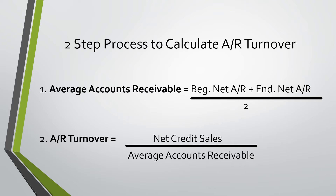Average accounts receivable is the beginning net accounts receivable plus ending net accounts receivable, divided by two. We then take that number to find the official accounts receivable turnover: net credit sales divided by the average accounts receivable.